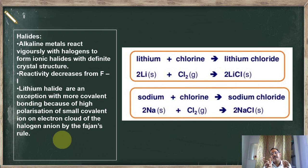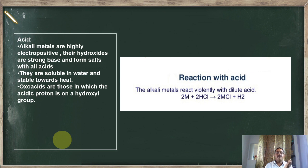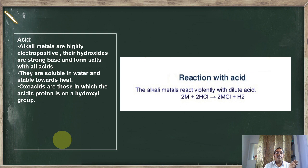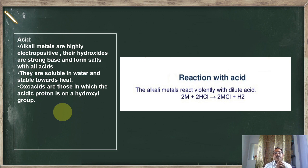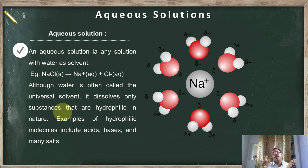Alkali metals also react with acids such as HCl, H₂SO₄, and HNO₃. They react with these mineral acids and form the corresponding salts: with HCl they form metallic chlorides, with sulfuric acid they form metallic sulfates, and with nitric acid they form metallic nitrates. Hydrogen gas is also evolved. Oxo acids are those where the acidic proton is on a hydroxyl group — for example, the OH⁻ in aqueous solution contains such a proton and is classified as an oxo acid.